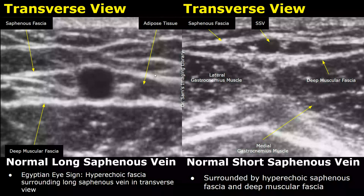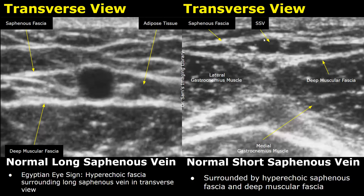These are transverse views showing the long saphenous vein, or the great saphenous vein, and the short saphenous vein, which is also called the small saphenous vein. The long saphenous vein can be seen between the hyperechoic saphenous fascia and another hyperechoic deep muscular fascia, and this hyperechoic area is the adipose tissue.